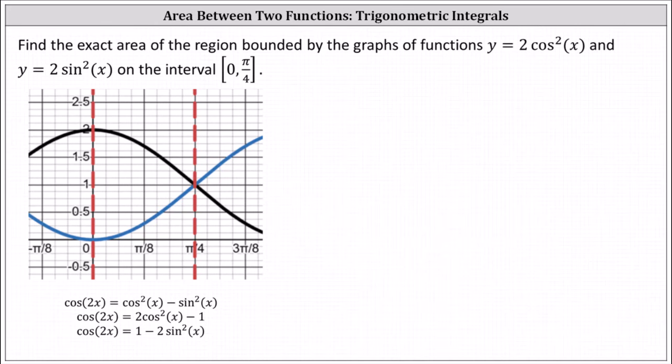On the graph below, y = 2cos²(x) is the black function and y = 2sin²(x) is the blue function. I've also graphed the vertical lines x = 0 and x = π/4 in red.